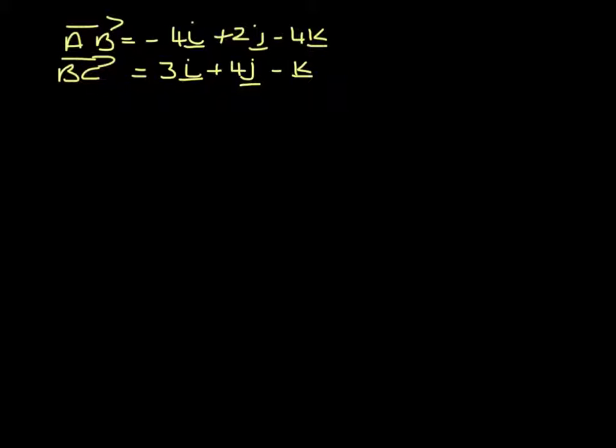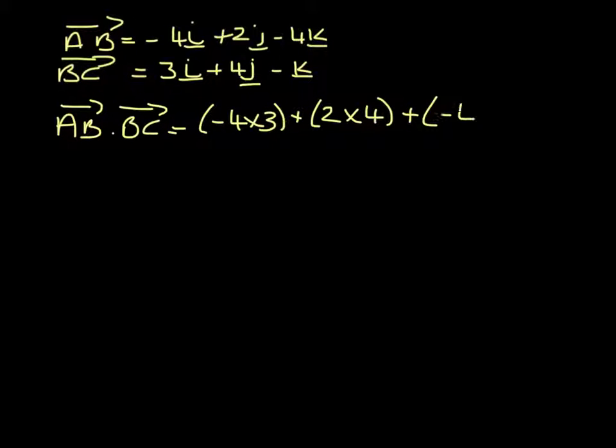To now work out if B is a right angle I'm going to take the dot product. The dot product is the product of the i's plus the product of the j's plus the product of the k's. So that gives me minus 12 plus 8 plus 4 which is 0.